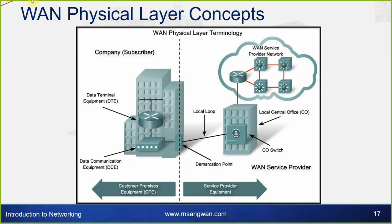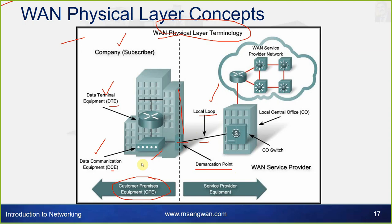At the physical layer of WAN, we have the customer subscriber's Data Terminal Equipment (DTE) and Data Communication Equipment (DCE). Physical layer terminology includes the local loop, demarcation point, customer premise equipment on the customer's side, and service provider equipment on the cloud/provider side. The WAN service provider network includes the local central office (CO) and CO switch.